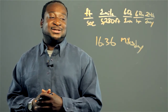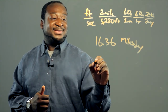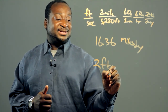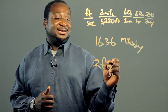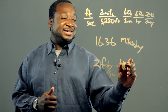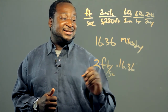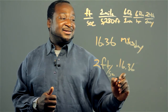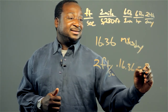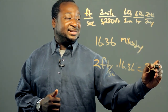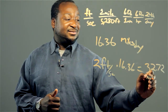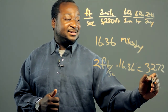So if someone was going 2 feet per second, we multiply that by 16.36, and we know that they're going 32.72 miles per day.